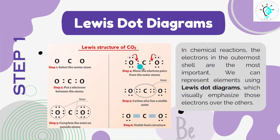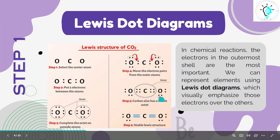Then we will complete the octet around each oxygen atom. Afterwards, to fulfill the valency for carbon and get it to its octet state, we will put two electrons from both the oxygen atoms. The octet for carbon is then stable and for the other atoms is also stable. This is the Lewis dot structure of carbon dioxide.